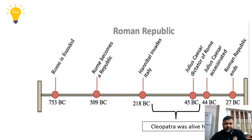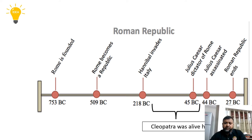If you see the timeline in the slide, you can see 753 BC — Rome was founded. 509 BC, Rome became a republic. In 218 BC, Hannibal invades Italy — the famous incident of Hannibal attacking Italy. This happened in 218 BC. From 218 up to 45 BC, Julius Caesar was the dictator of Rome.